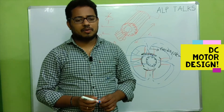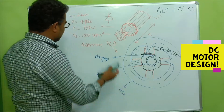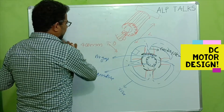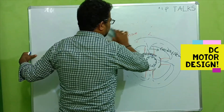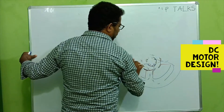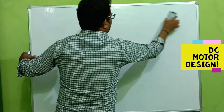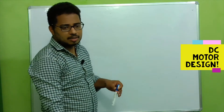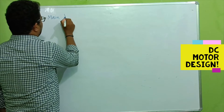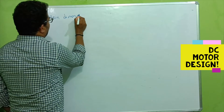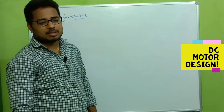In this video we are going to calculate the main dimensions. D and L are the main dimensions — D is the diameter and L is the armature length. We are going to calculate these main dimensions D and L simultaneously. There are other different aspects involved, so first we calculate the main dimensions using empirical formulas.